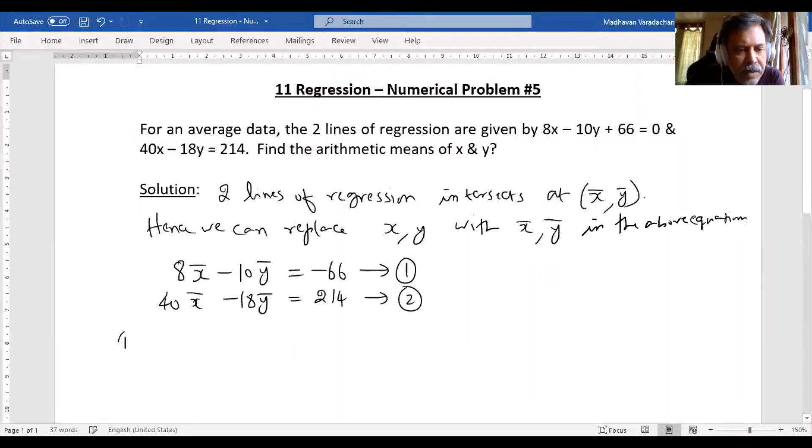What do we get? 40X̄ - 50Ȳ = -330. Let me call this equation 3.